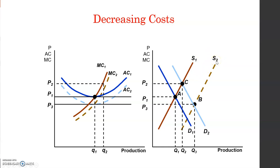In this market, costs are decreasing as more companies enter. Therefore, the marginal cost and average total cost curves shift downward.